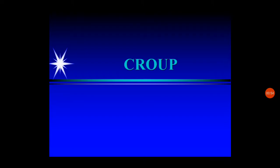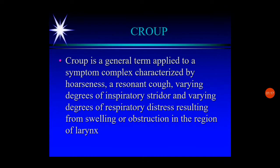CROUP is a very common disease of childhood and uncommon in adults. CROUP is a general term applied to a symptom complex characterized by hoarseness, a resonant cough, varying degrees of inspiratory stridor, and varying degrees of respiratory distress resulting from swelling or obstruction in the larynx or in the region of the larynx. It is not a disease in itself — it is a general term.